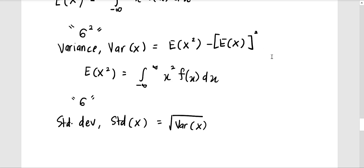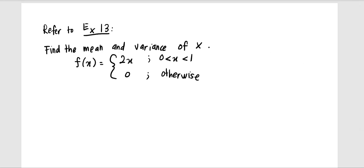Now we look at the examples. This example is referred to as example 13, our previous example. The question is to find the mean and variance of x. This is the PDF function of the continuous random variable, and now we are going to calculate the mean and also the variance.